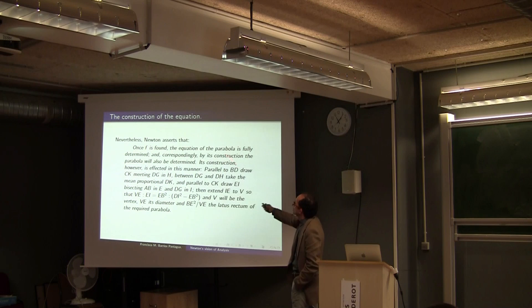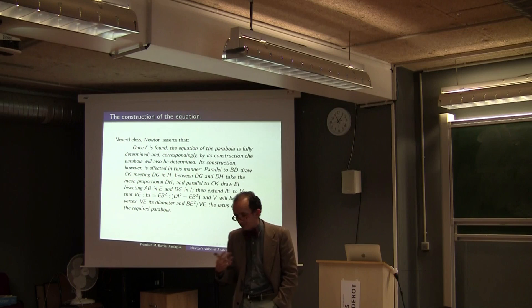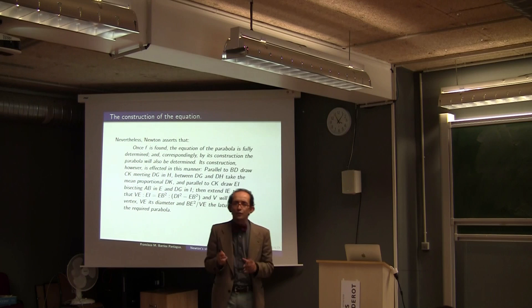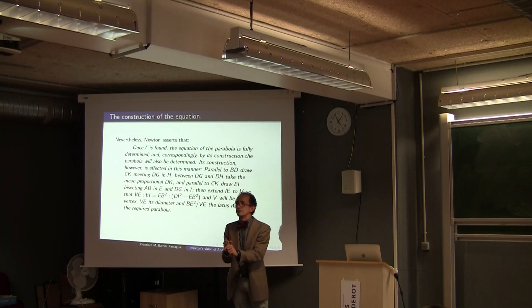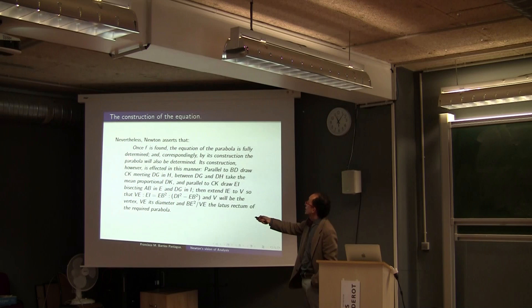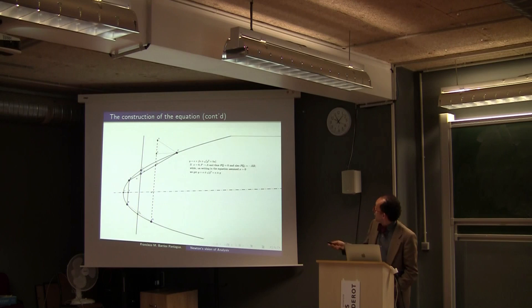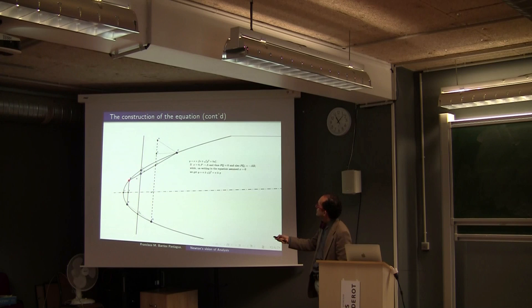So, after some magical algebra in between, the equation becomes this one. Where F, which has not appeared earlier, is this expression here, and A, this coefficient here, is the distance, or the segment, AB. Remember, A and B were points given. Then AC is B, also C was given, AG, GD, RC, and D. So, Newton asserts that once this is found in terms of the given data, the equation of the problem, the equation of the parabola is completely determined. But, correspondingly, by its construction,